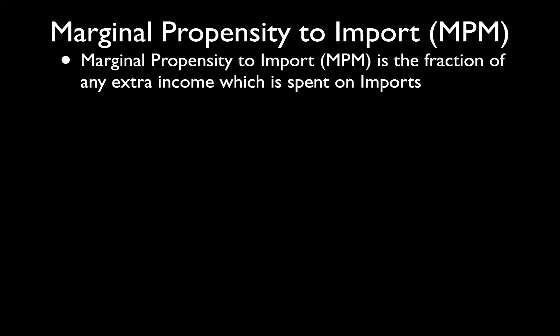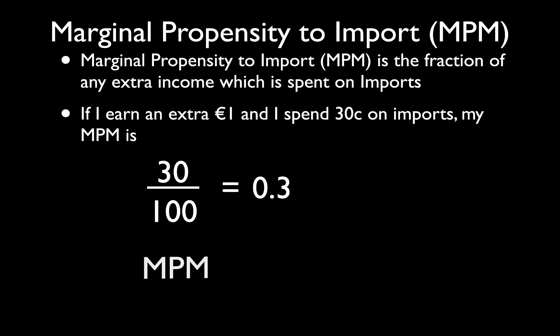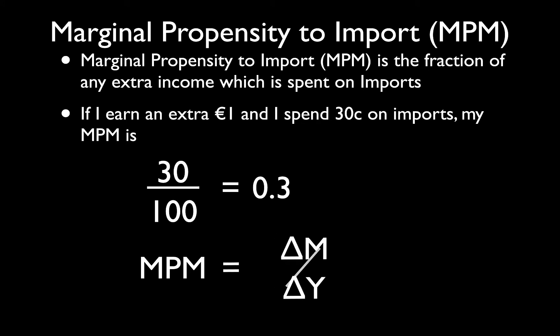The marginal propensity to import is the fraction of any extra income which is spent on imports. Looking at this example: if I earn an extra euro and spend 30 cent on imports, what's my MPM? There are 100 cent in a euro. Of that 100 cent extra that I earn — that's my change in income — I have spent 30 cent on imports. So it's 30 over 100, which equals 0.3. The general form of the formula is the change in spending on imports over the change in income.